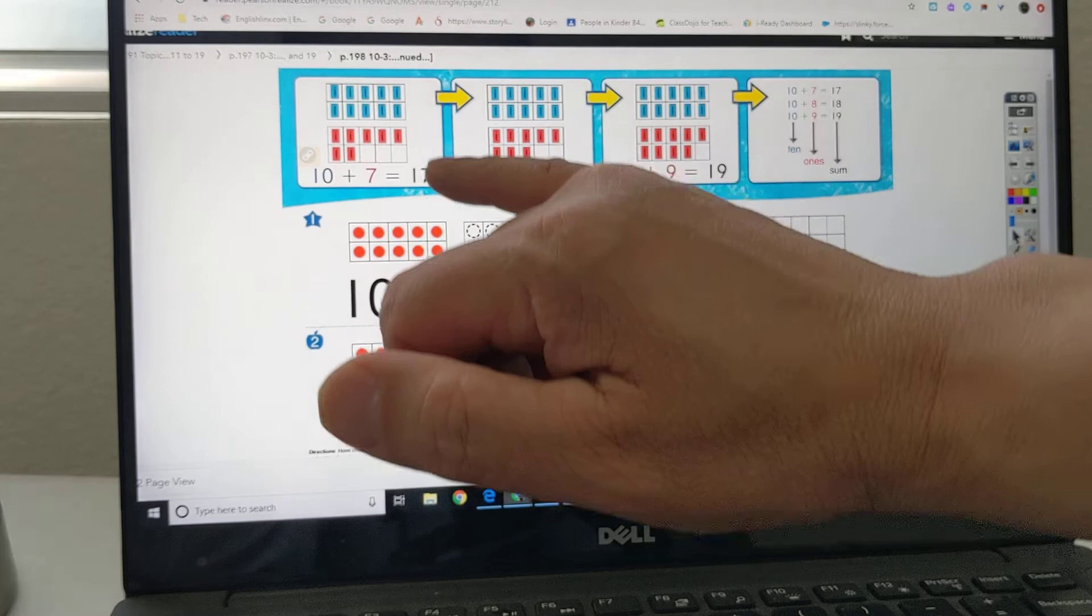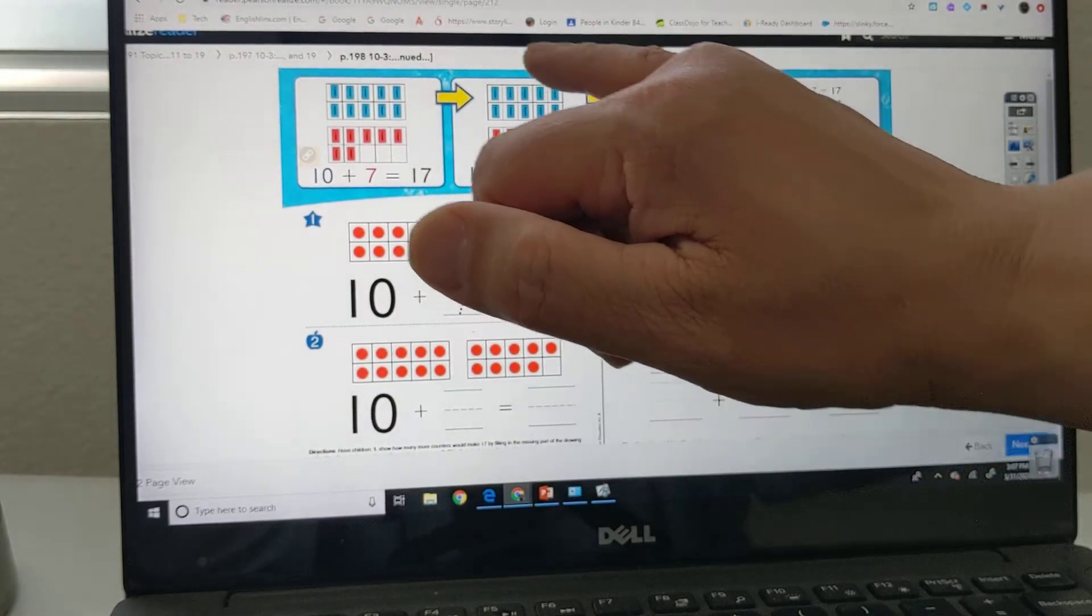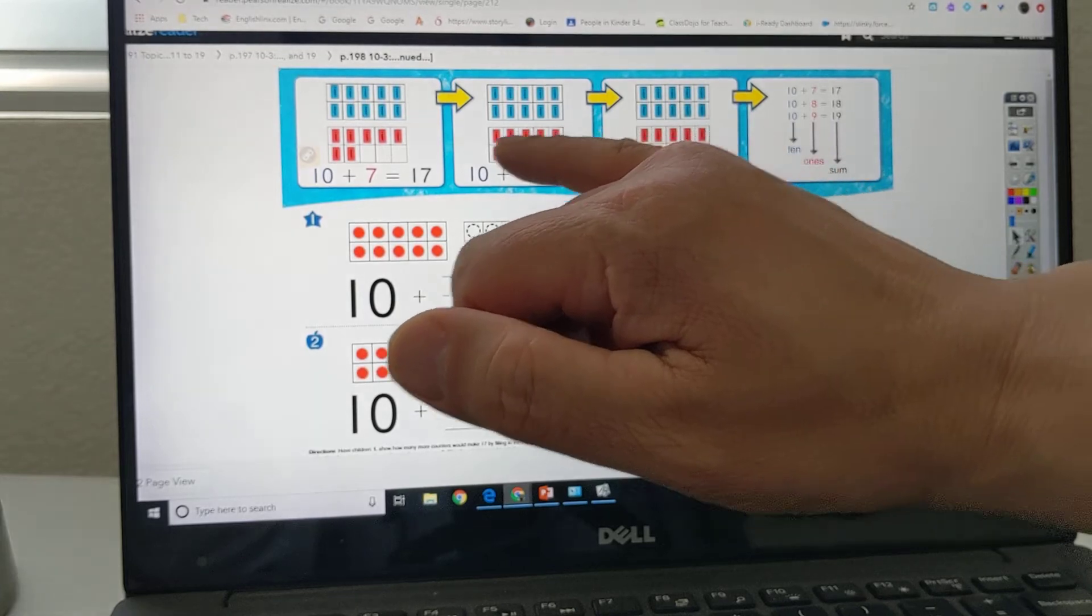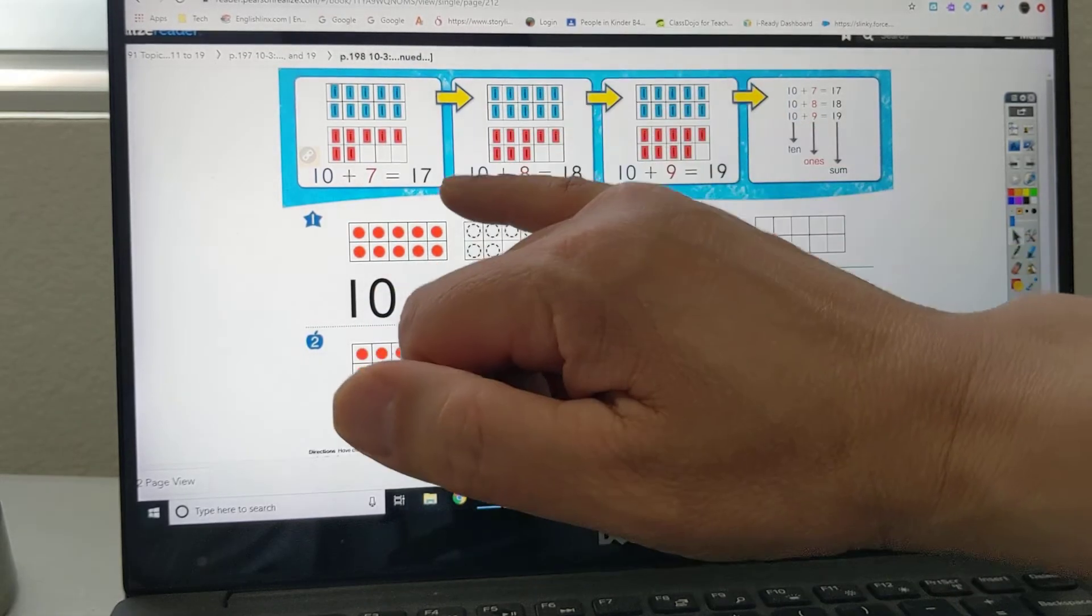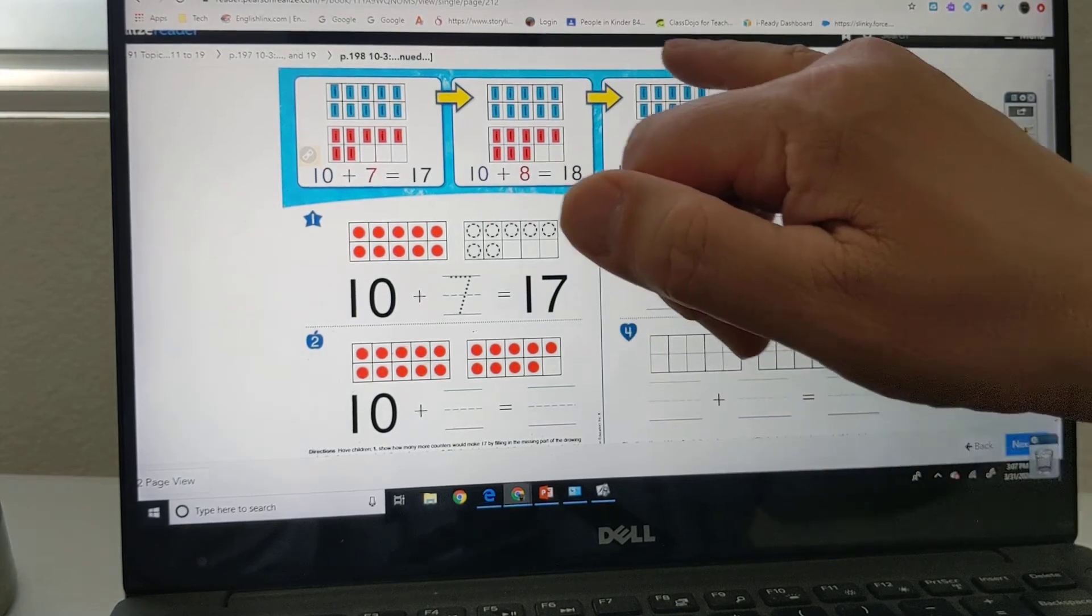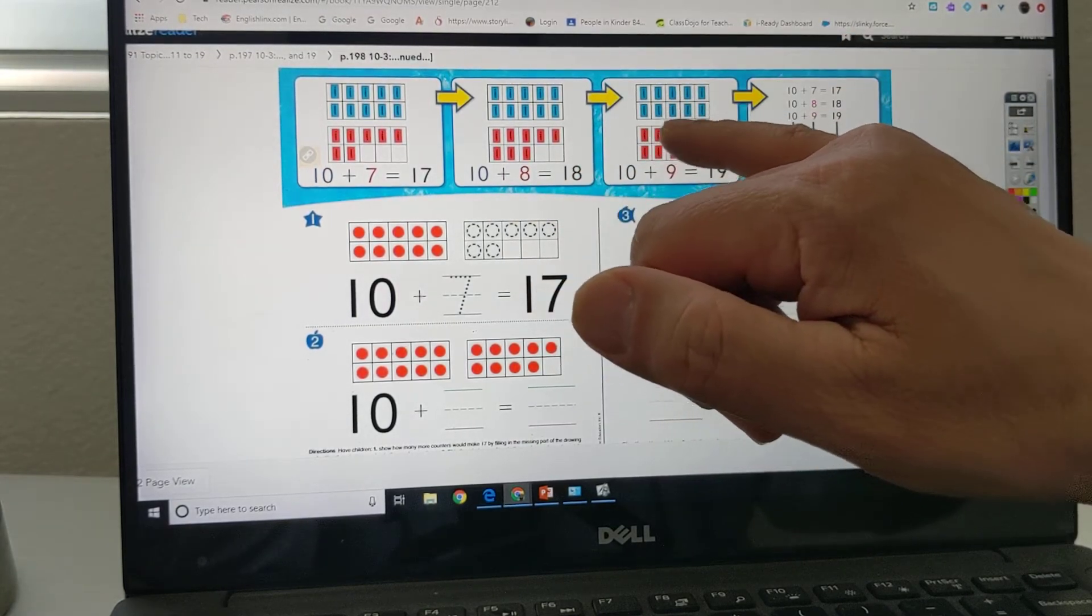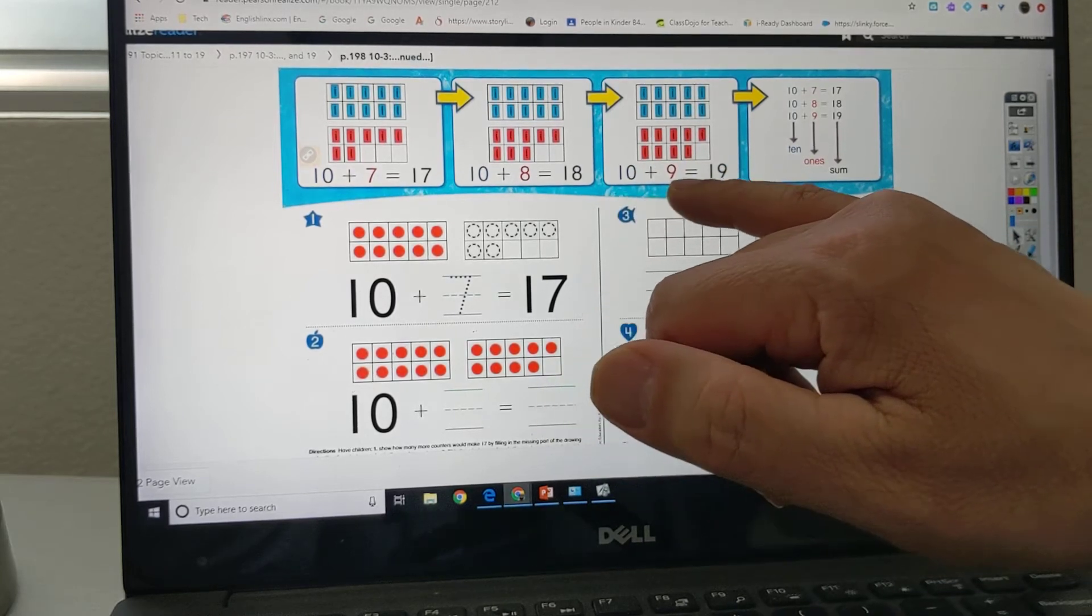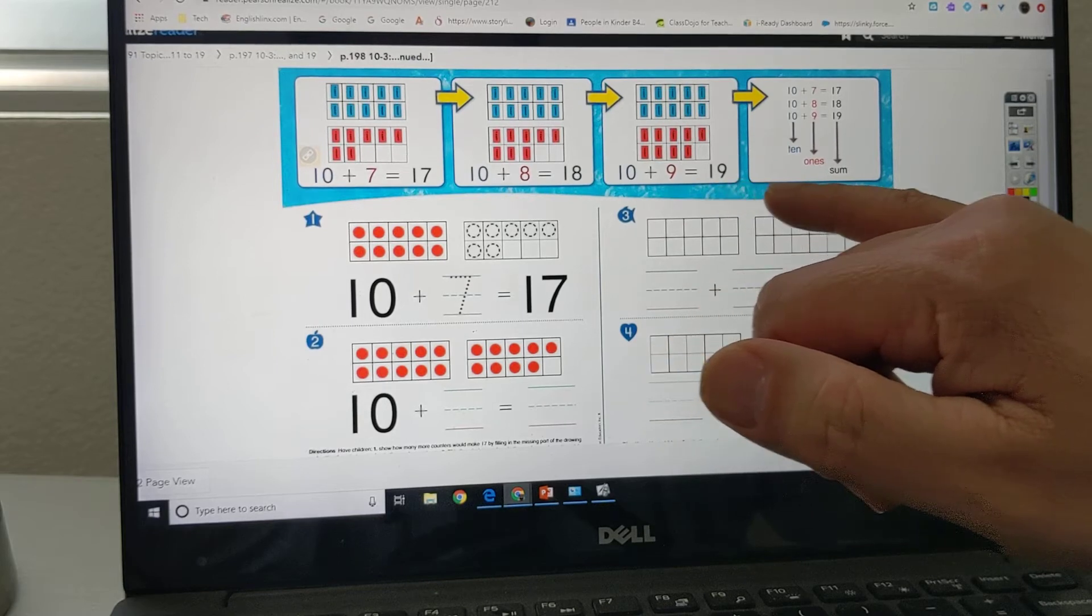Now here's 18. You got 10 frame. 10 plus 1, 2, 3, 4, 5, 6, 7, 8. 10 plus 8 is equal to 18. Now we have 19 here. So there's 10 plus 1, 2, 3, 4, 5, 6, 7, 8, 9. So 10 plus 9 is equal to 19.